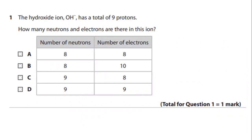Let's look at question 1. The hydroxide ion OH- has a total of 9 protons. How many neutrons and electrons are there in this ion?